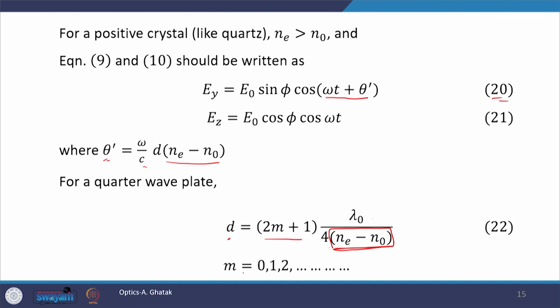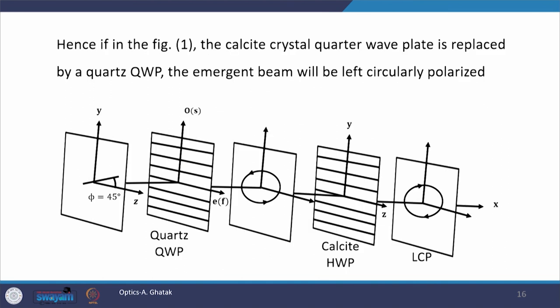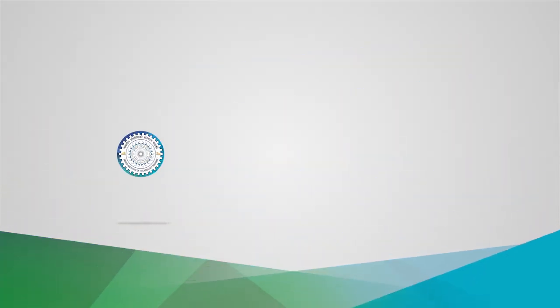The only difference is that the denominator now has N_E − N_O instead of N_O − N_E, and m is an integer. Hence, in the first figure, if the calcite crystal quarter wave plate is replaced by a quartz quarter wave plate — which is a positive crystal — the emergent beam will be left circularly polarized. This is all for today. I end my lecture here and thank you for joining me.